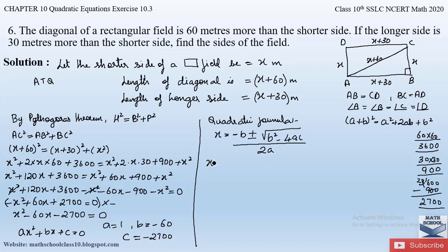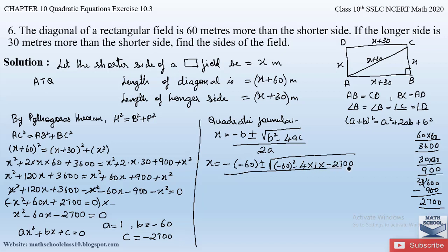Substituting: x = (−(−60) ± √((−60)² − 4·1·(−2700))) / (2·1), which gives x = (60 ± √(3600 + 10800)) / 2.